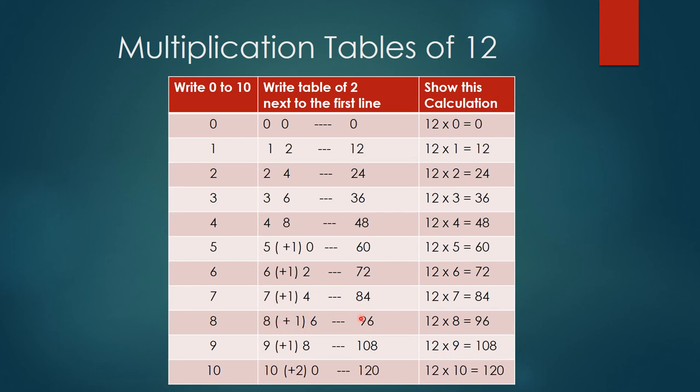Then 2 × 9 = 18, so 9 plus 1 becomes 10 and 8, which is 108. Then 2 × 10 = 20, so 10 plus 2 becomes 12, so that is 120.